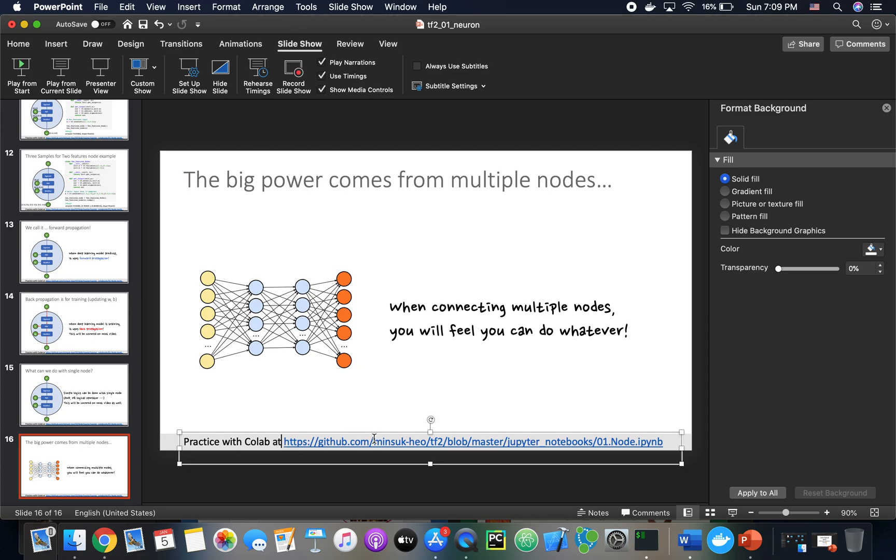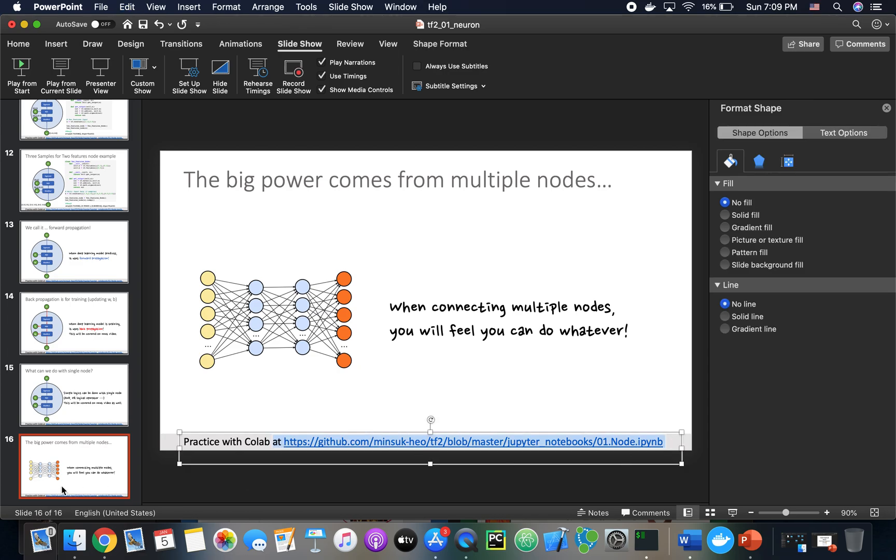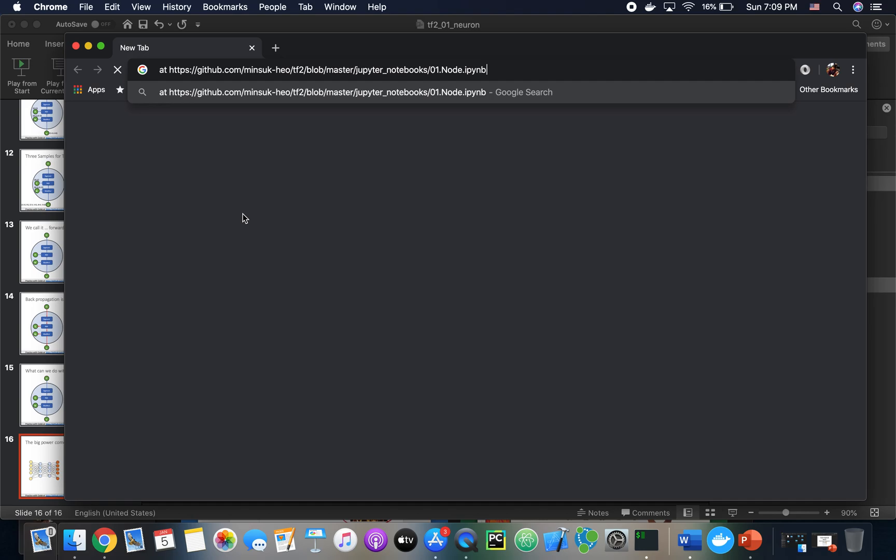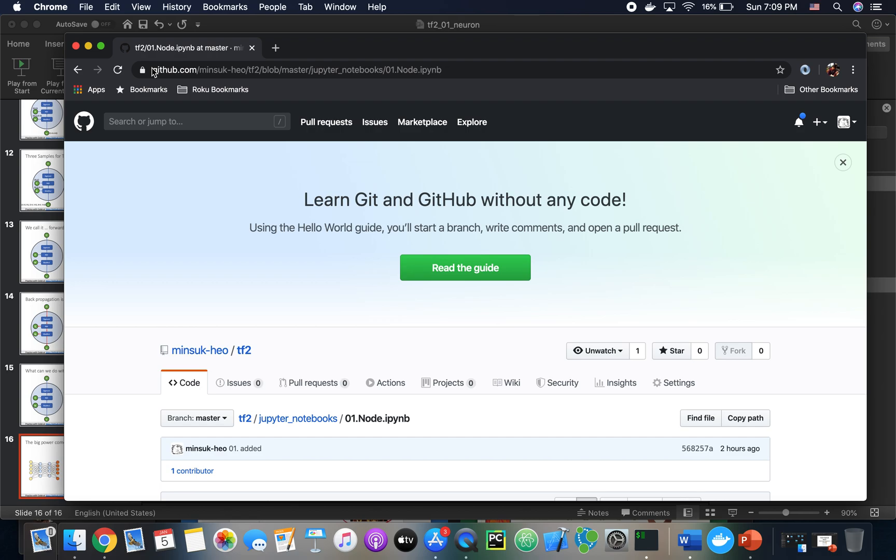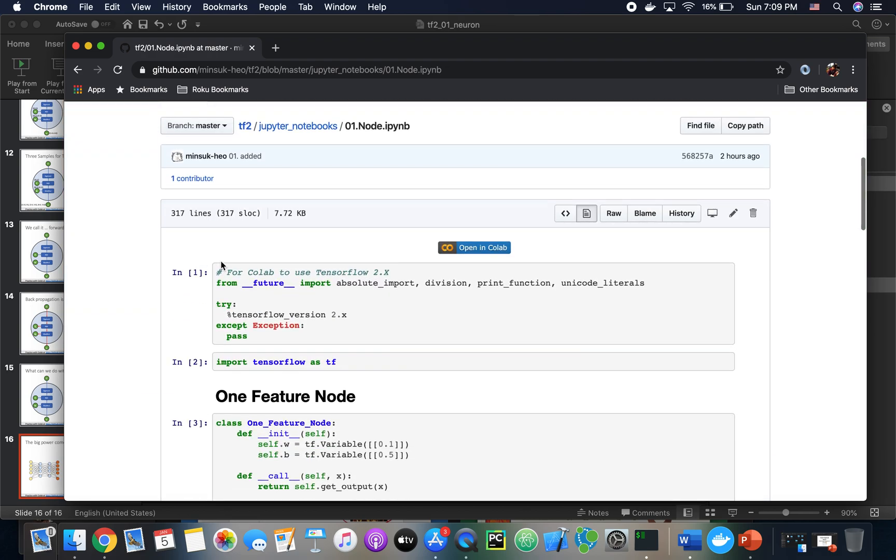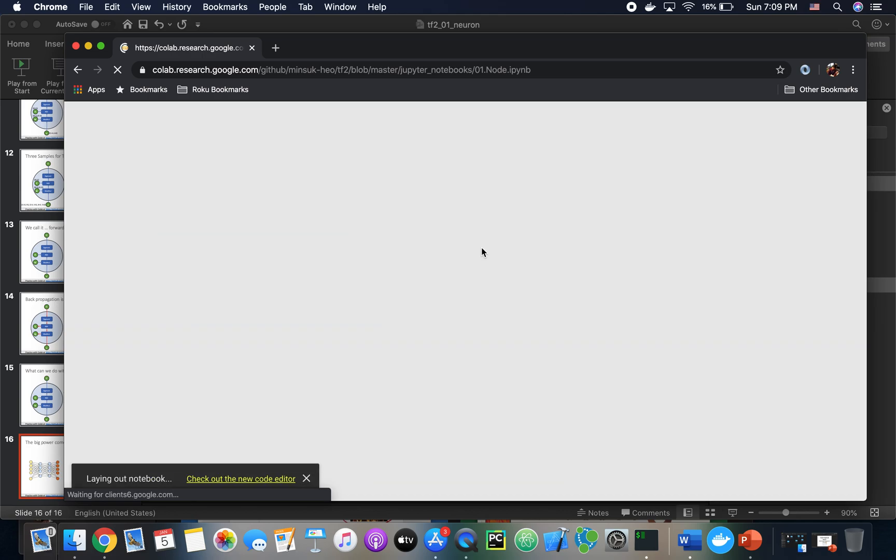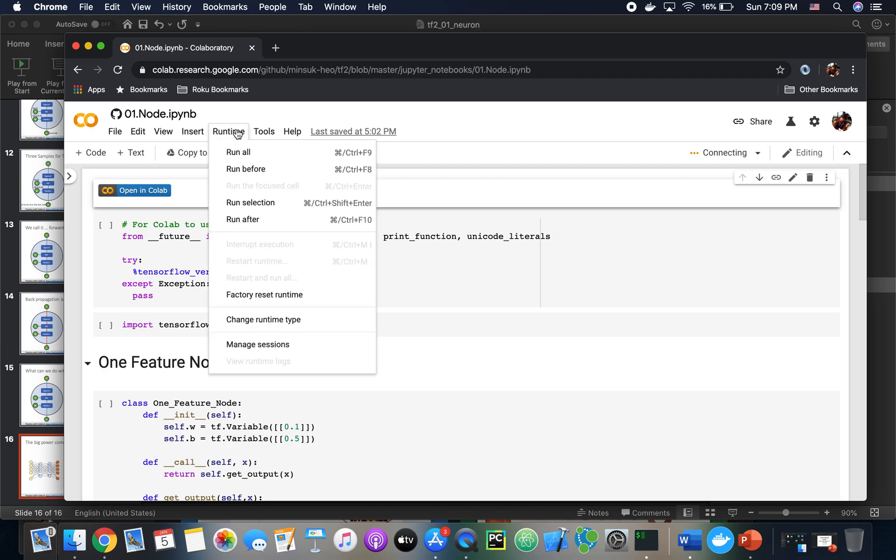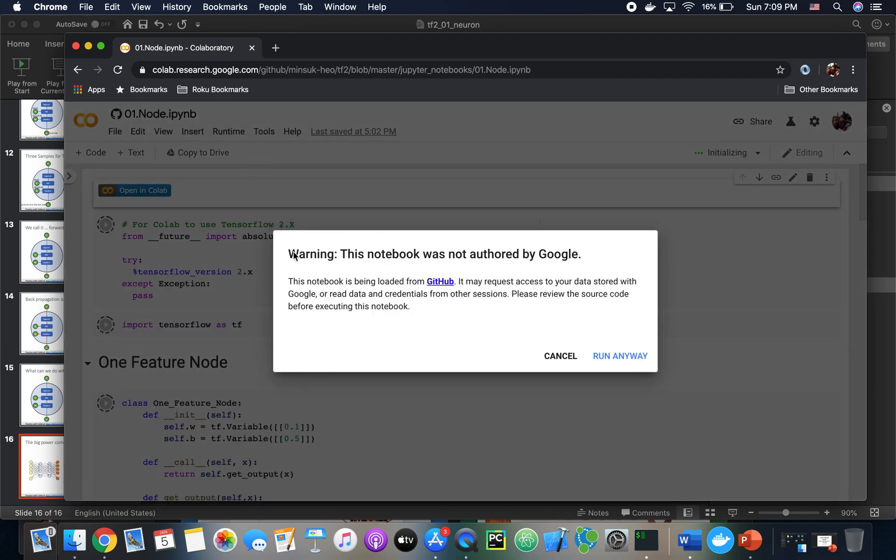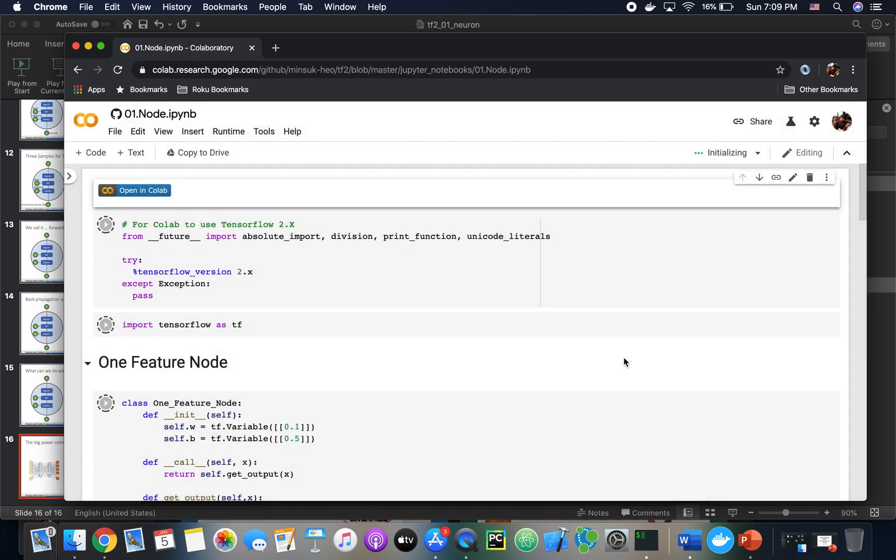So I'm going to copy this and go to Chrome here. And you will see the Jupyter notebook here. Just click open in Colab. Then this will automatically go to Colab. And you just run everything from here. Run all. Make sure run anyway here.